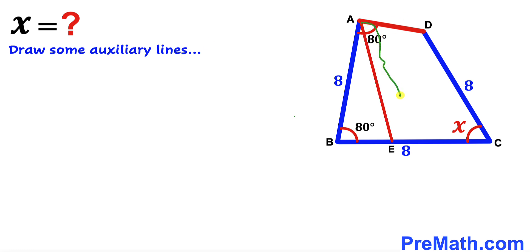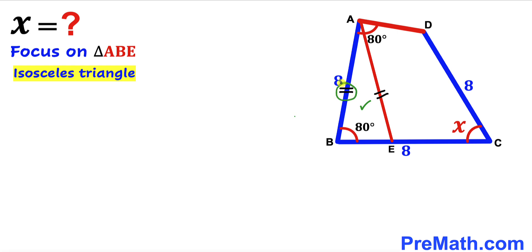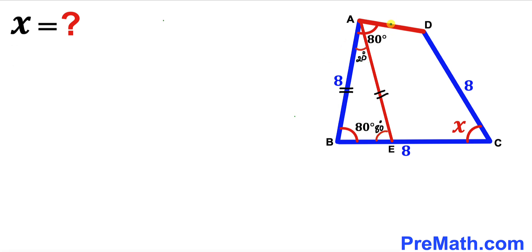I have drawn segment AE such that side AB equals segment AE. Focusing on triangle ABE, we can see this is an isosceles triangle since those two side lengths are equal. Therefore, the base angles are congruent — both 80 degrees. Since the sum of interior angles in a triangle is 180 degrees, the apex angle AEB must be 180 − 80 − 80 = 20 degrees.